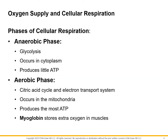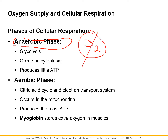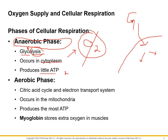In cellular respiration, we've got two phases. Anaerobic means without oxygen. What happens is glucose enters the cell and it's going to be broken in half. This is called glycolysis — it literally means to break down glucose. It happens in the cytoplasm and does not have to have oxygen present. It's only going to produce two ATP, which is very little. This automatically happens.